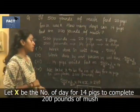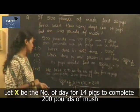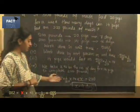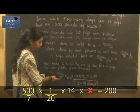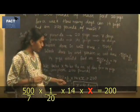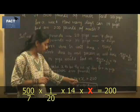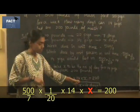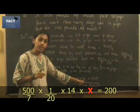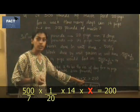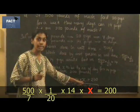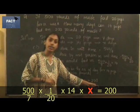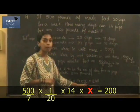Now we take x to be the number of days for 14 pigs to complete 200 pounds of mush. So the equation would be 500 by 7 multiplied by 1 by 20 multiplied by 14 multiplied by x. This gives you the amount of mush that 14 pigs would feed on in x number of days. As per the question, they are supposed to complete 200 pounds of mush in this many number of days.